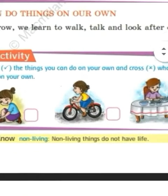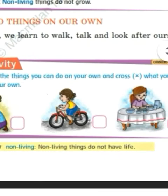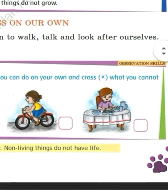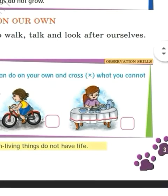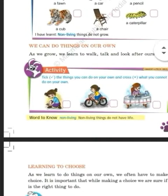The next picture shows a child riding a cycle. If you can do it on your own, then you can tick it. The last picture shows a child eating food. If you can eat food on your own, then you can tick it.